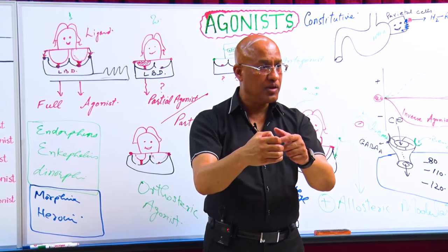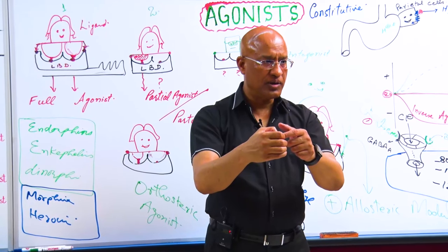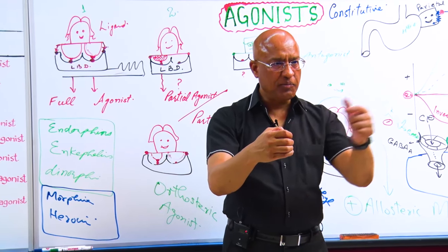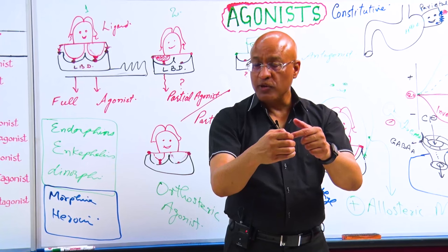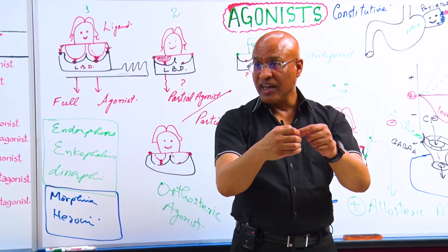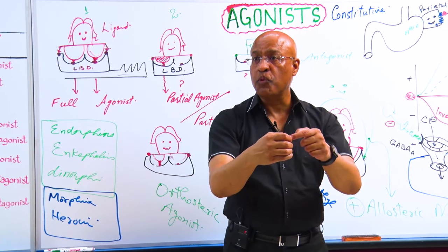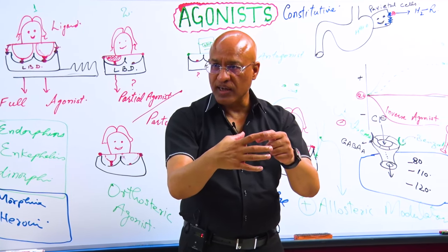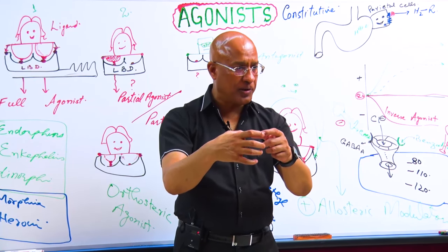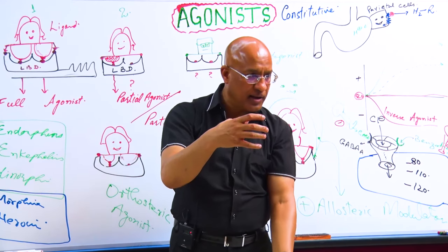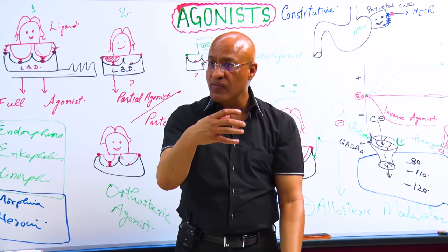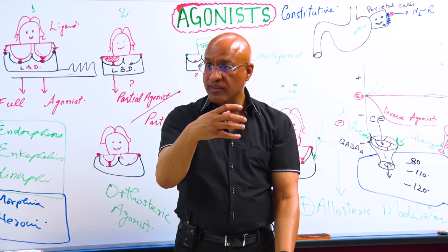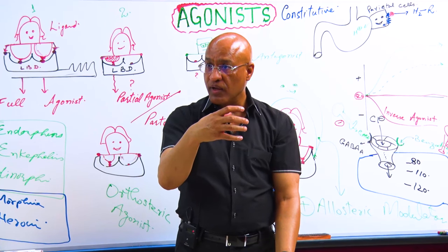Barbiturate, sorry, barbiturate binds here. They don't increase the frequency. Rather, they bind there and cause prolonged opening of the chloride channel. And when there's prolonged opening, so much chloride goes in that membranes become extremely inhibited, and that will lead to death.